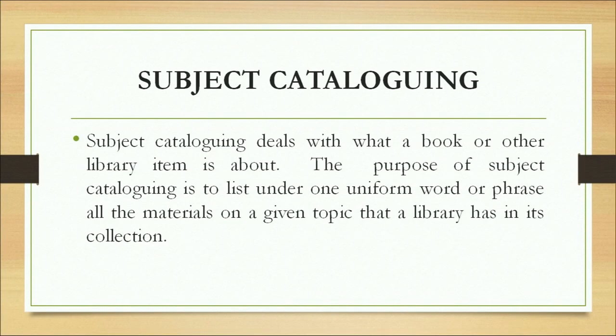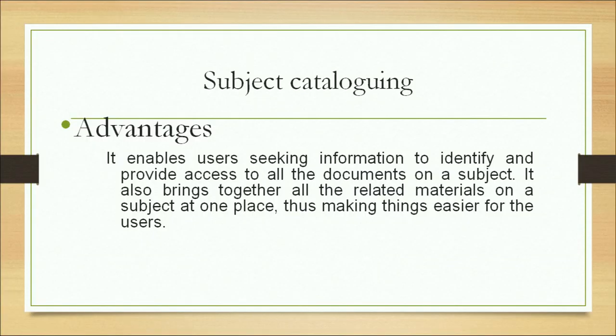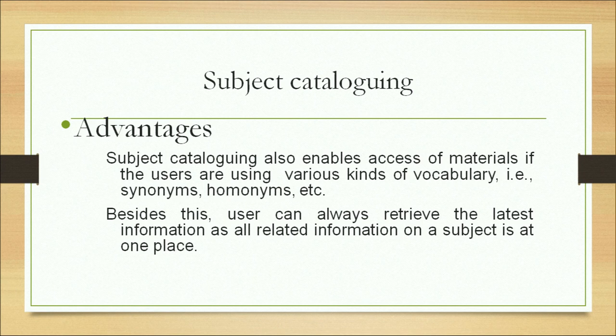Subject cataloging deals with what a book or other library item is about. Its purpose is to list under one uniform word or phrase all the material on a given topic that a library has. The advantages include: it enables users to identify and access all documents on a subject; it brings together all related material on a subject at one place; it enables access even when users use various vocabulary such as synonyms; and users can retrieve the latest information since all related information is at one place.